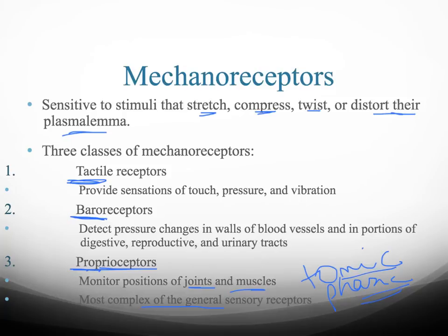Tactile receptors provide sensation of touch, pressure, and vibration. Baroreceptors are very important because they detect differences in pressure, working together with blood vessels to either increase or decrease influx to control blood pressure. They also work together with the digestive system, reproductive system, and urinary system. We'll be looking at these on the next few slides.